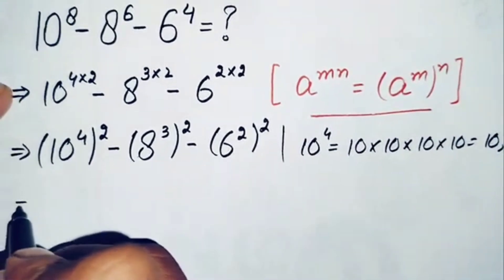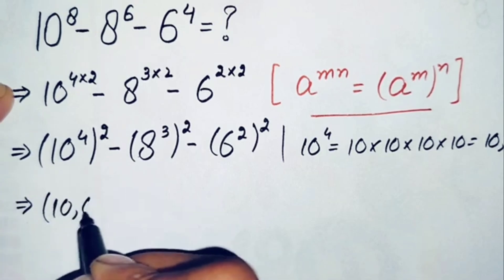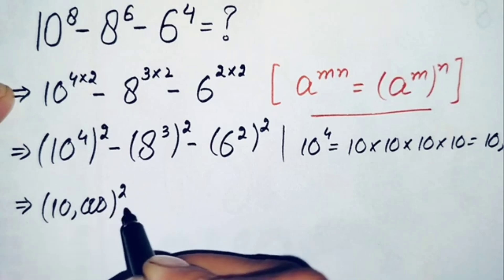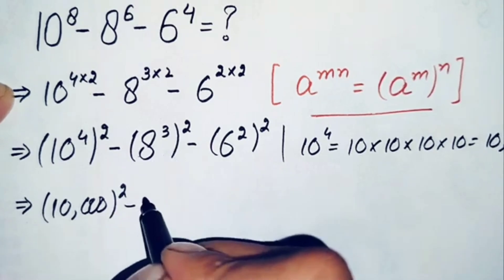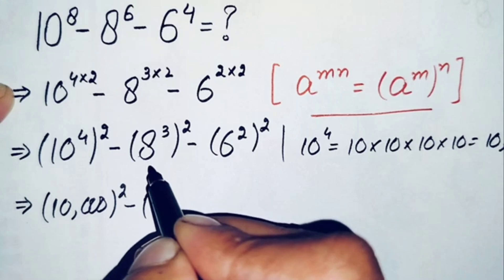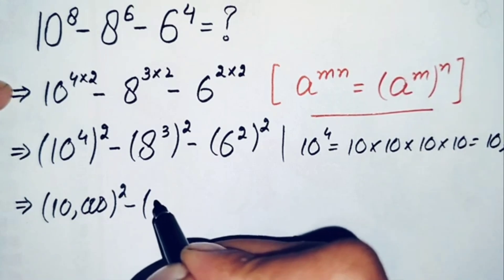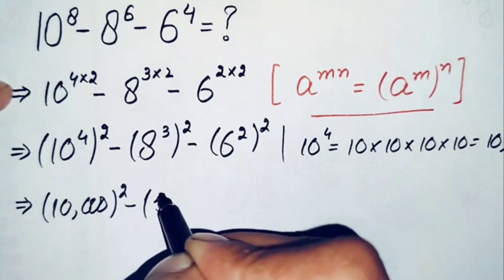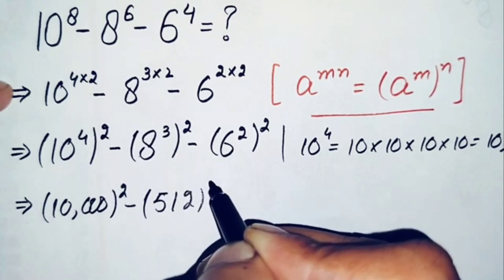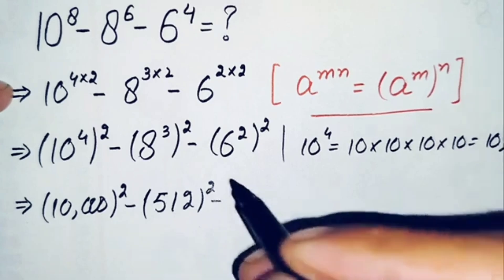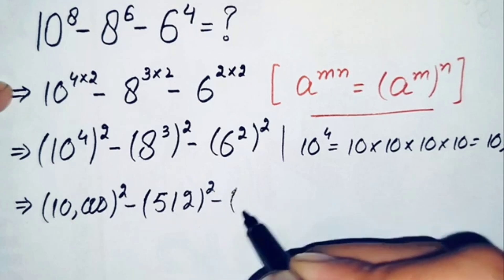This becomes 10,000 whole square minus — now what is the value of 8 raised to power 3? 8 raised to power 3 means we multiply 8 three times: 8 times 8 is 64, and 64 times 8 is 512. We replace 8 raised to power 3 with 512, giving 512 whole square, minus — now 6 raised to power 2 means 6 times 6 is 36, whole raised to power 2.